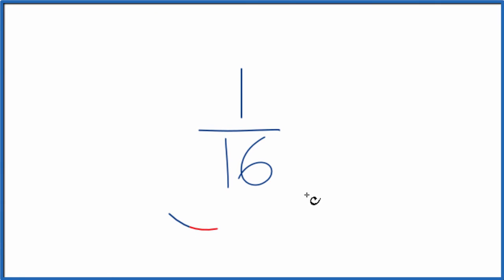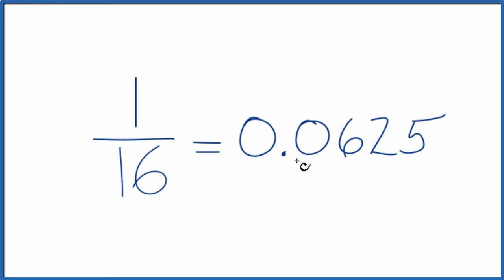Let's convert the fraction 1/16 to a decimal. The first thing you could do is just divide 1 by 16 on your calculator. When you do that you end up with 0.0625. So that's one way to convert 1/16 to a decimal.